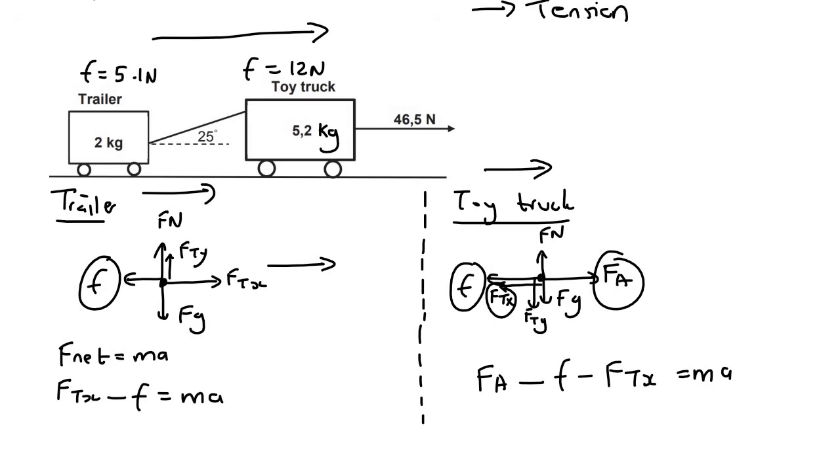Then we are going to fill in as much as we can. So we don't know the tension force and the friction force on the trailer. We do know it's 5.1 and the mass is two, but the acceleration, we don't know. By the way, if they did give us the acceleration, which they often do, then you can still use this three step technique. However, you would just fill in the acceleration over there and then you would easily get the tension force. Now for the next one, we know the applied force here is 46.5. The friction force acting on that one is 12. And the FTX, we don't know. And then the mass is 5.2A.